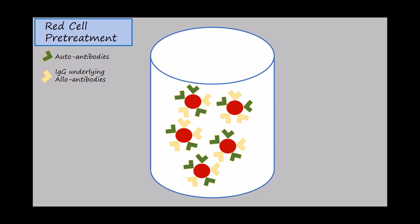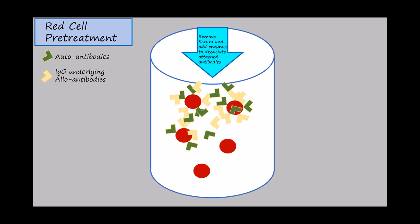First, the serum is removed and the red cells are washed multiple times with saline. Then the red cells are treated with enzymes to dissociate those attached antibodies. You can see that the antibodies are going into solution and the red cells are going down to the bottom of the tube.